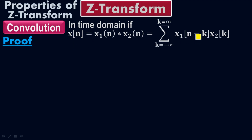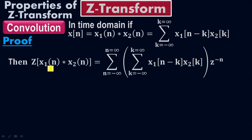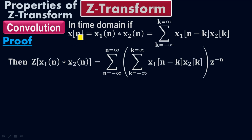I'm going to plug this expression for X(N) into the Z-transform equation. So if X(N) equals this expression, then the Z-transform of X1(N) convolved with X2(N) equals the double summation of X1(N minus K) times X2(K) times Z to the negative N. According to the Z-transform, X(Z) equals the summation of X(N) times Z to the negative N, and my X(N) is X1(N) convolved with X2(N).